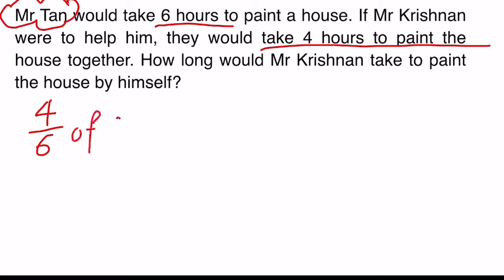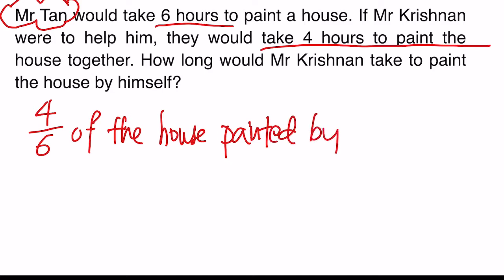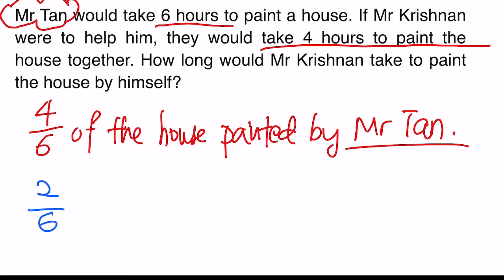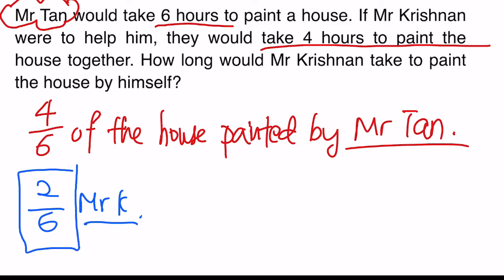Four-sixths of the house is painted by Mr. Tan. That would mean that the remaining two-sixths is painted by Mr. Krishnan. So we are roughly there already. So two-sixths — this fraction — is painted by Mr. Krishnan. Now let us observe this fraction: two-sixths.